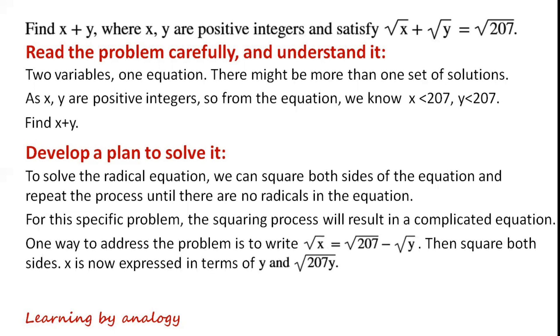One way to address the problem is to write √x = √207 - √y by rearranging the equation. Then square both sides. Now x is expressed in terms of y and √(207y). As x is a positive integer, √(207y) must be a perfect square.